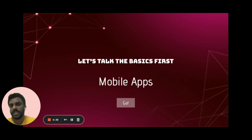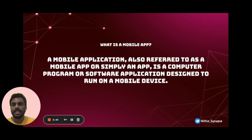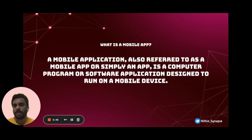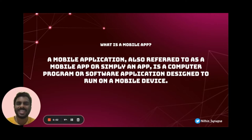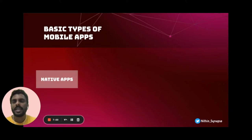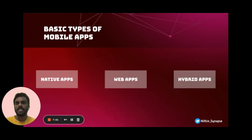Understanding basics is the core part in performance engineering, so let's start there. Basically, what is a mobile app? An application designed to run on a mobile device — we all have smartphones with sets of applications installed. There are basically three types of mobile applications: native apps, web apps, and hybrid applications.